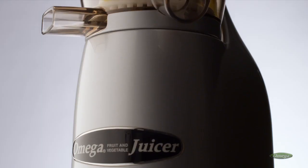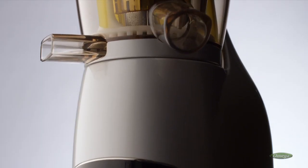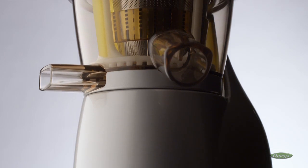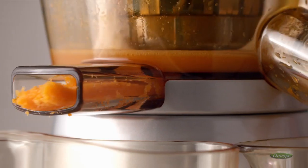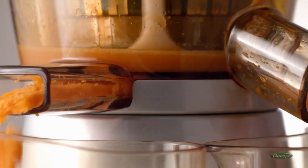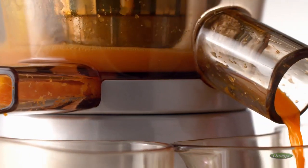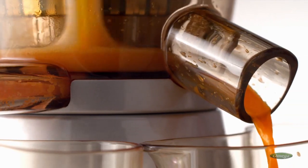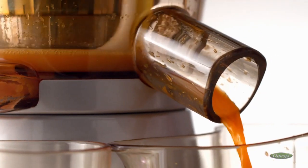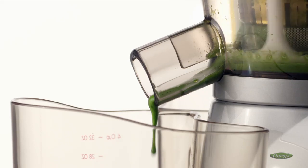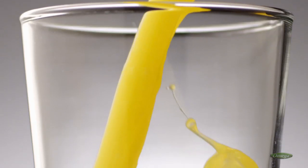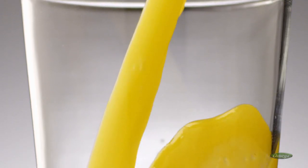The Omega Vert Low-Speed Juicer ensures your juice will stay fresh longer and is healthier than juice from other juicers. The secret is the Vert juices at low speeds of 80 RPMs, preserving beneficial enzymes and nutrients normally lost at the high speeds of regular juicers. The slow speed of the Vert also prevents oxidation, truly keeping your juice as fresh as can be.